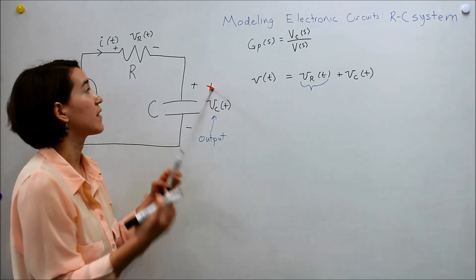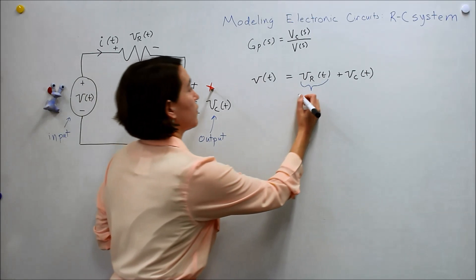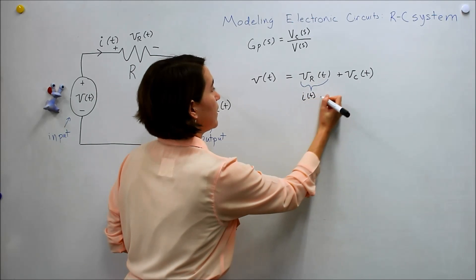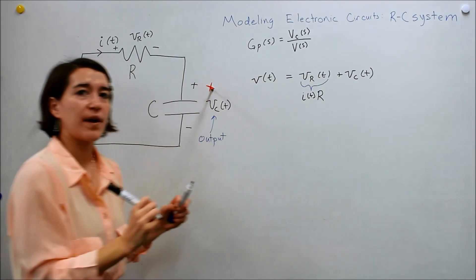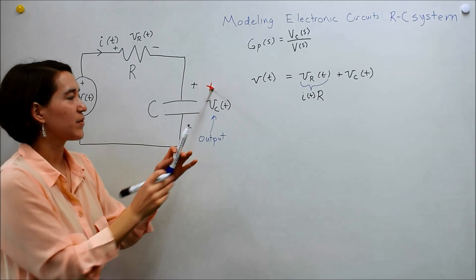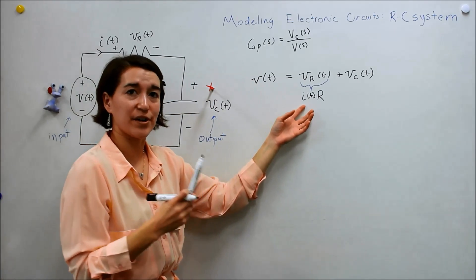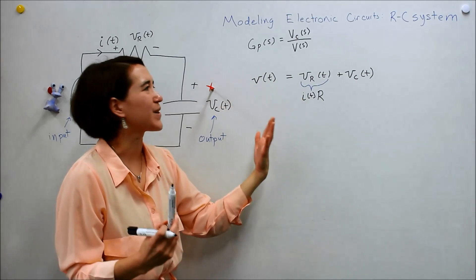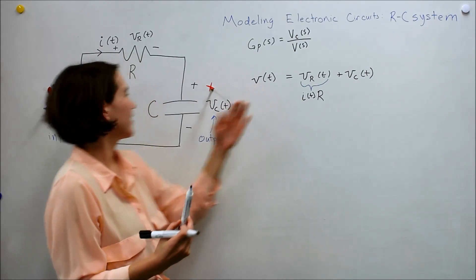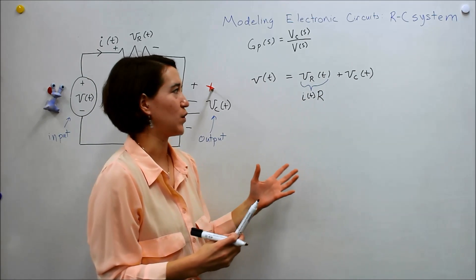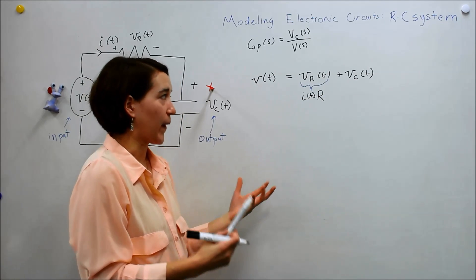We know from Ohm's law that v equals ir. So v equals I of t times the resistance. Okay, great. So now we've brought in I, which is our current. But I is not in terms of either the voltage, input voltage, or the output voltage, the capacitor voltage. So we need to think a little bit harder.